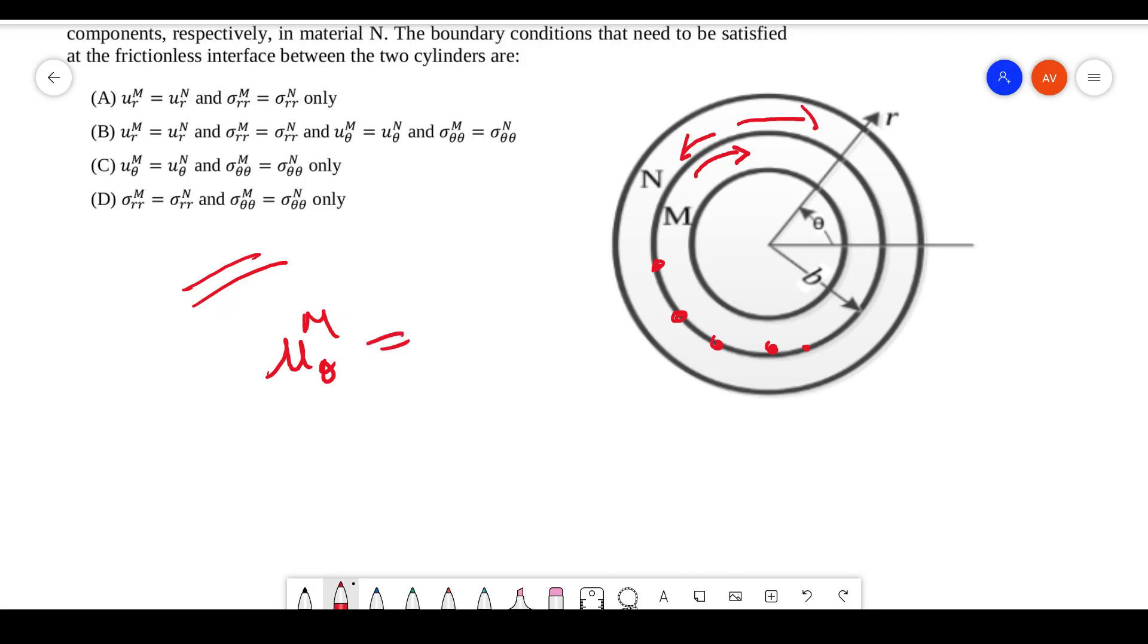It can be unequal also. The probability of it being equal is less; it might be unequal most of the time. So that automatically cancels option C and option B.